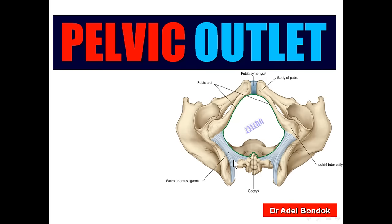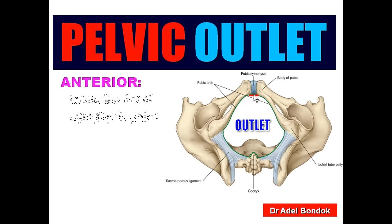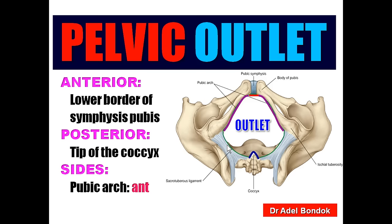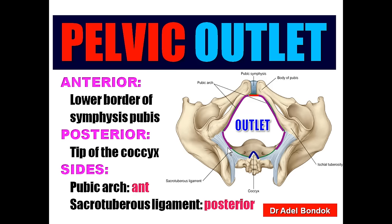The pelvic outlet is bounded anteriorly by the lower border of the pubic symphysis, posteriorly by the tip of the coccyx, and on each side by the pubic arch anteriorly and the sacrotuberous ligament posteriorly. Thus, the pubic symphysis shares in bounding both the pelvic inlet and the pelvic outlet.